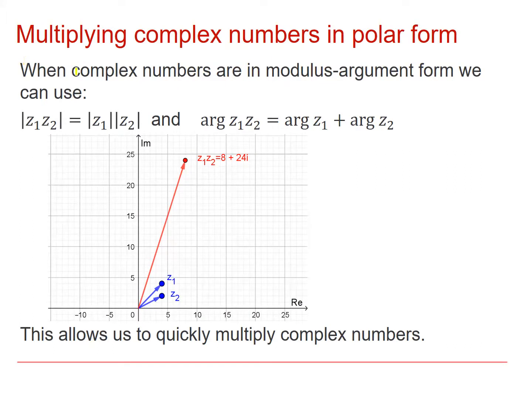If we have two complex numbers in mod argument form, we can use the fact that the product of the two complex numbers will have a modulus formed by multiplying the moduli of each individual complex number, and the argument of the product is formed by adding the arguments of the two complex numbers. You have seen this in a previous sequence of videos. This allows us to quickly multiply complex numbers.